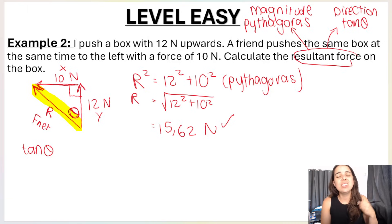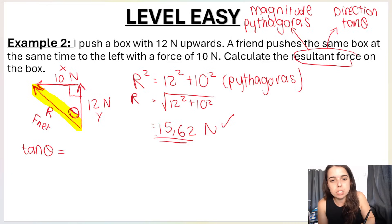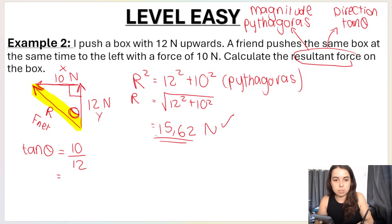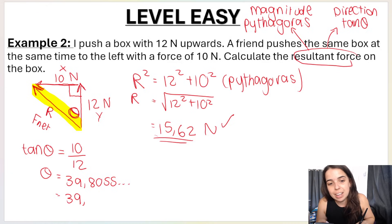I recommend always using tan theta because theta is always in the corner without arrowheads, and tan uses opposite (x) over adjacent (y). In theory you could use cos or sine now that you have the hypotenuse, but if you made a rounding error on the hypotenuse, you'd carry that mistake through. So tan theta = opposite/adjacent = 10/12. To find theta: shift-tan(10/12) = 39.8055...°